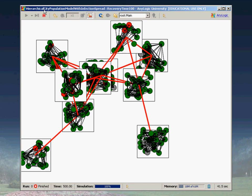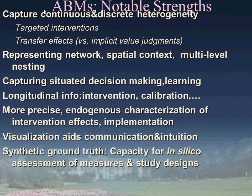Some notable strengths of agent-based models: they can capture continuous and discrete heterogeneity—which sounds minor but is of considerable import for certain research questions. They support targeted interventions where heterogeneity is either something we take advantage of or something we need to be careful about. For example, we want to ensure that an intervention doesn't merely produce average gains but that certain populations are not disproportionately adversely affected while others gain disproportionately—that the effects are equitable. They're also effective for representing network and spatial context and multi-level nesting.